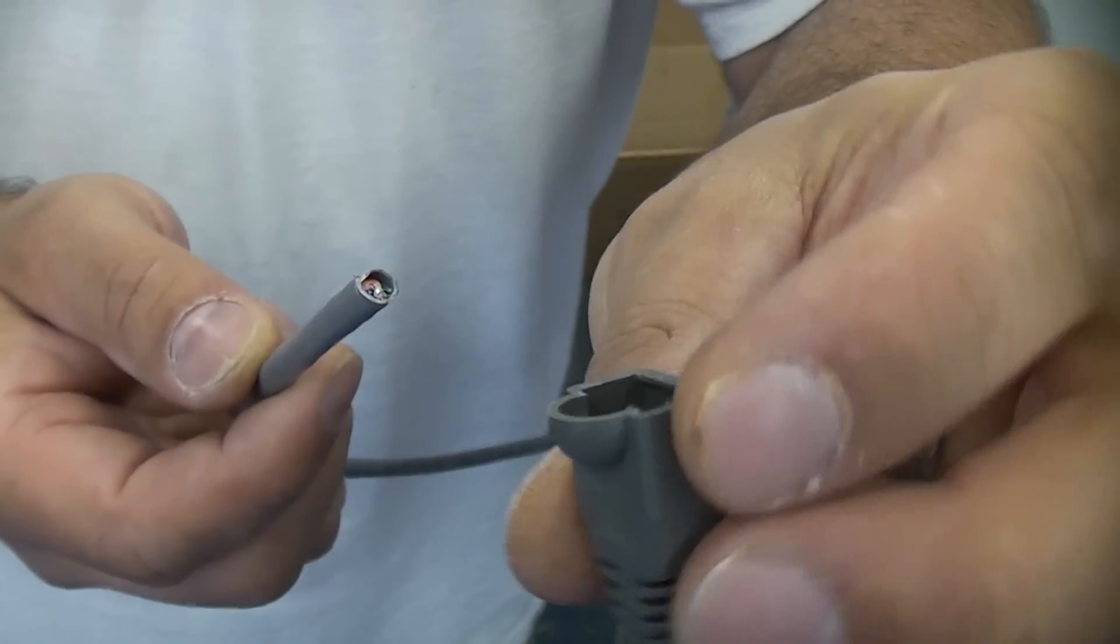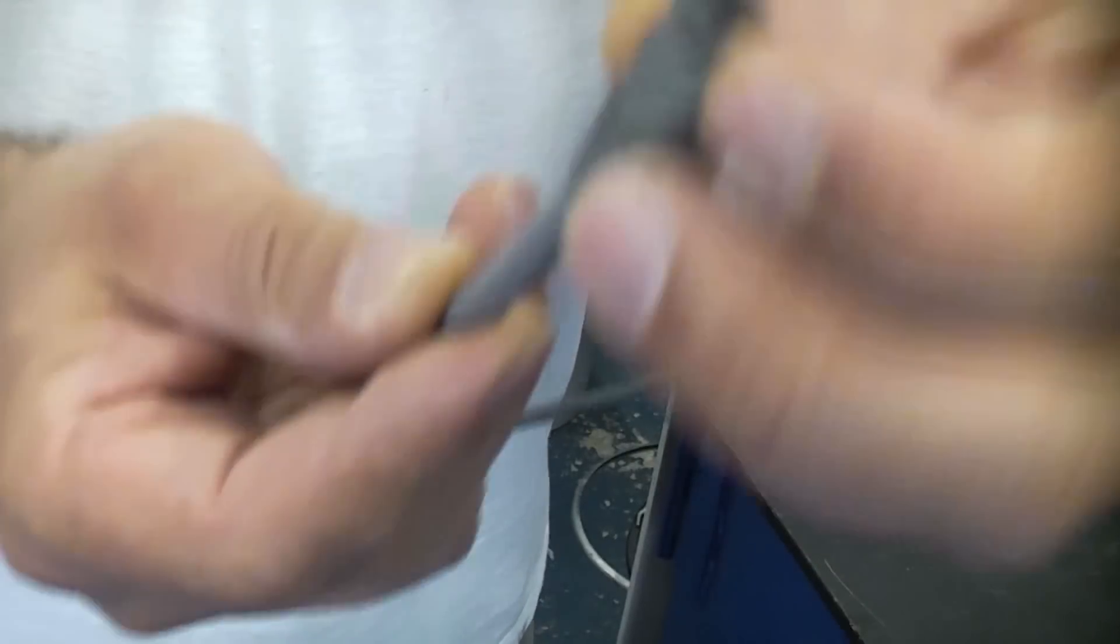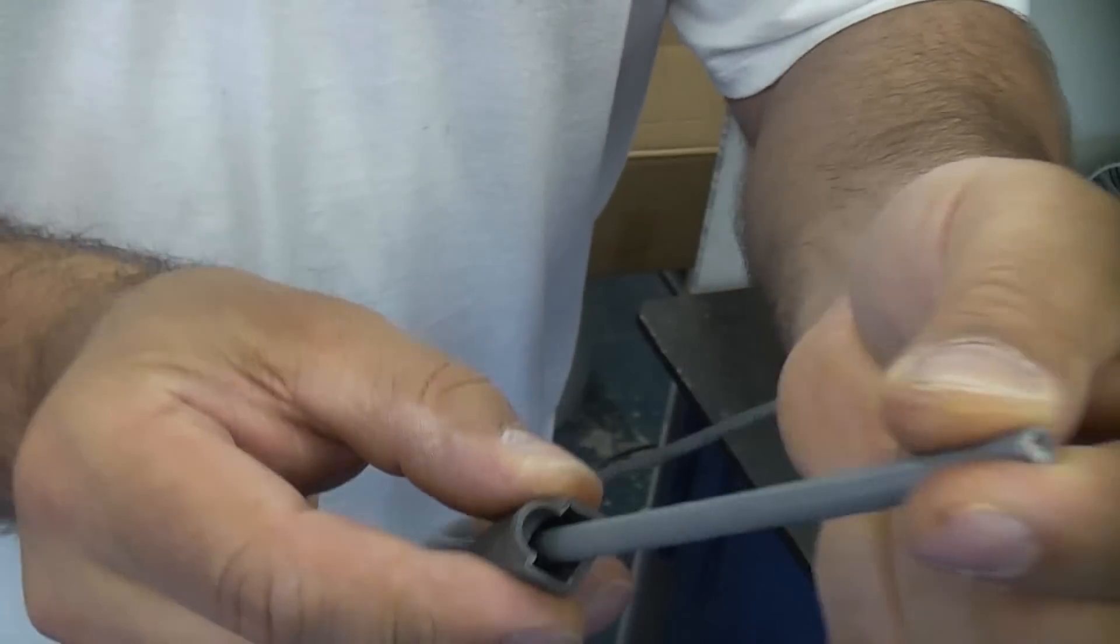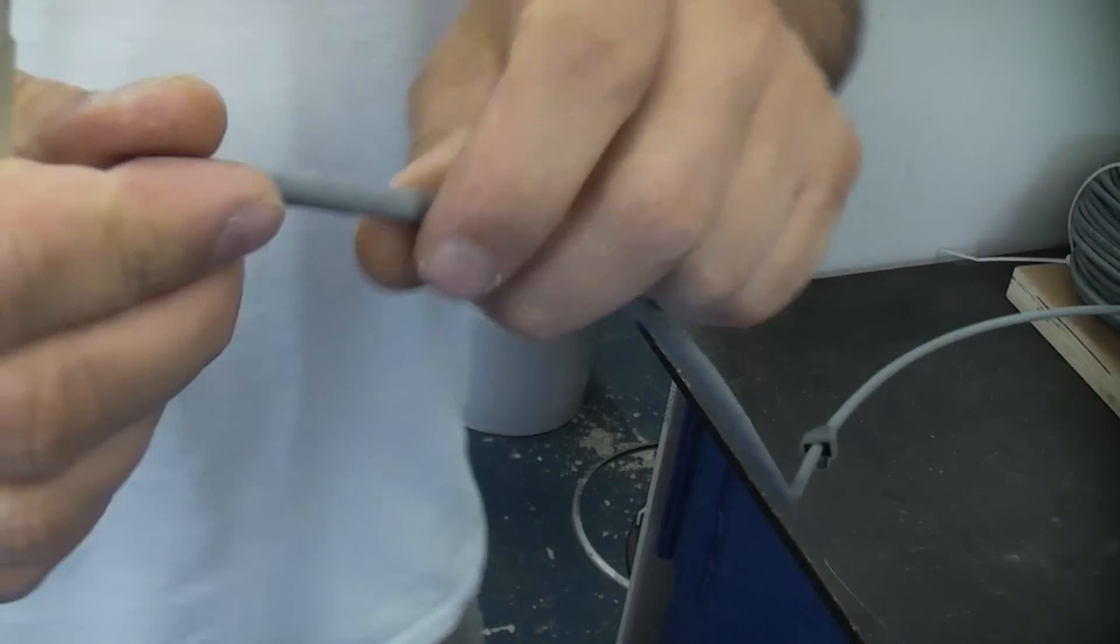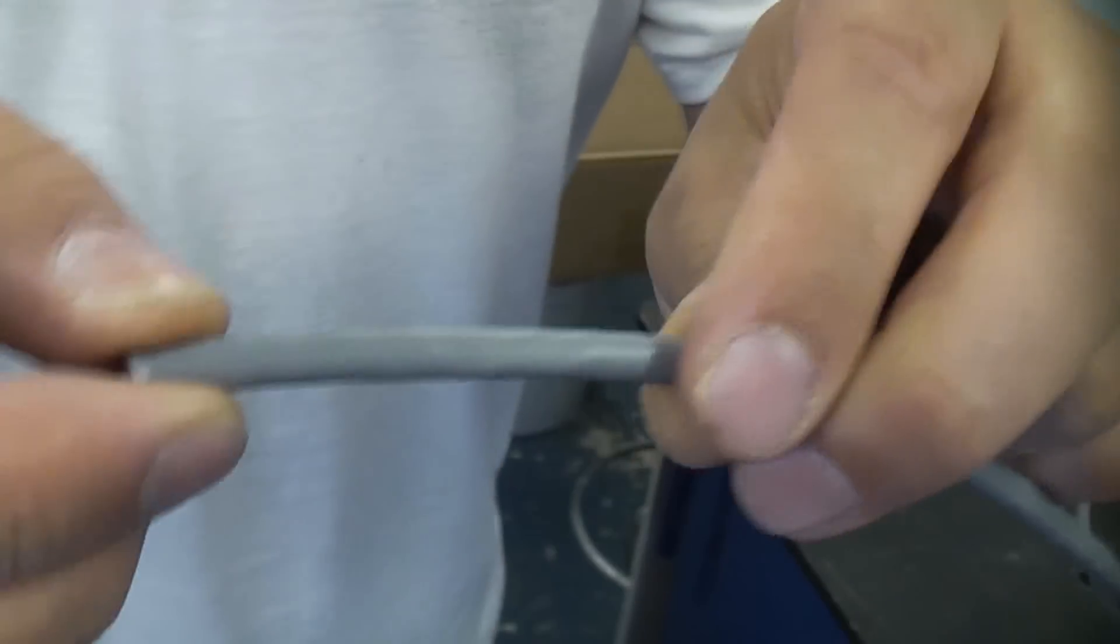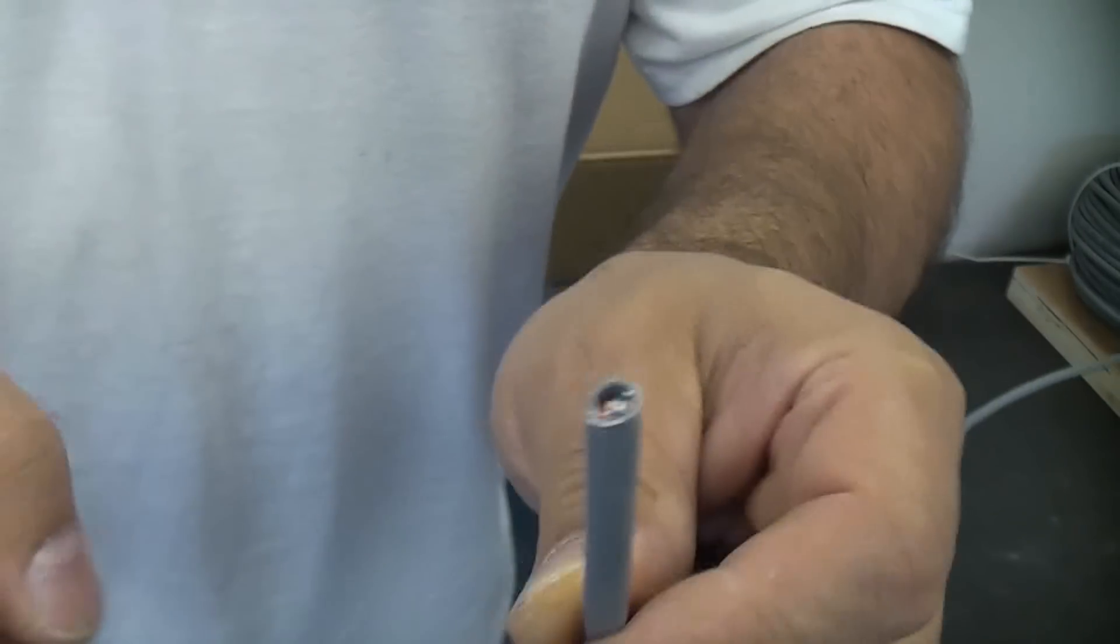So to start off with what I'm going to do is put a strain relief boot over the actual cable. I could slide that back up later on. Now we need to remove some of the outer insulation from the cable.